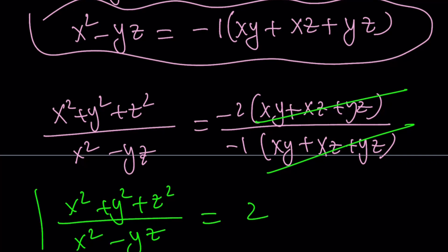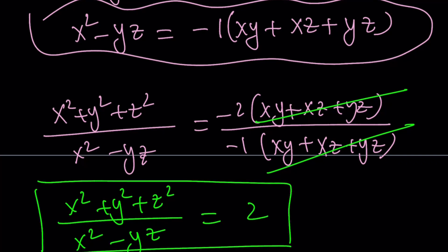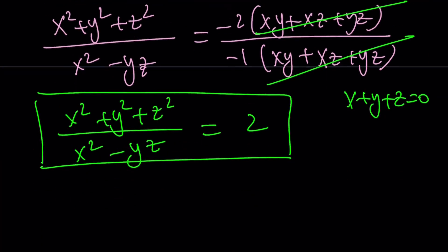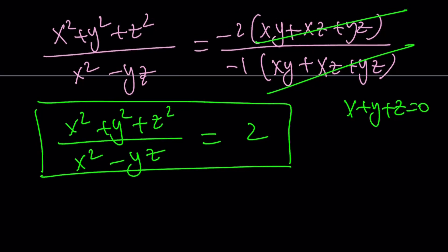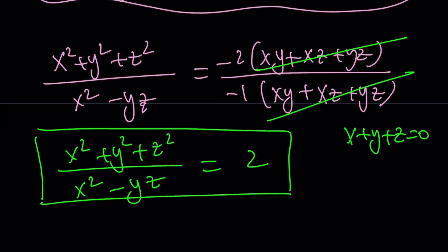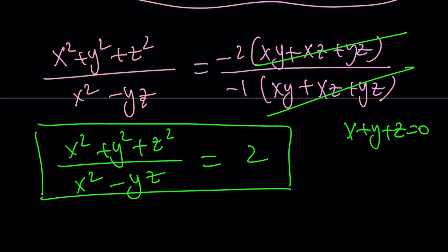The third method: since we're given x plus y plus z equals 0, you could basically just replace x, y, z with certain values. One thing you should be very careful about is not to use 0, 0, and 0 for x, y, z, because that's going to make our expression indeterminate — you'd get zero over zero. That's also why we can guarantee that multiplying by x is valid, because we know x does not equal zero.